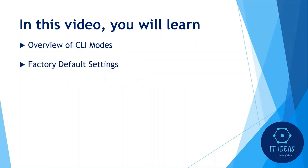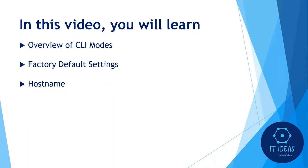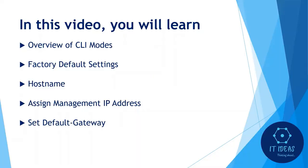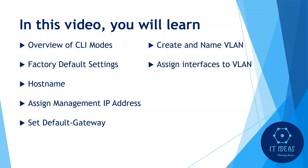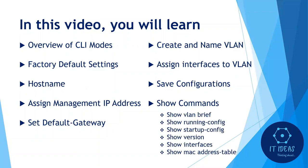How to configure a Cisco switch to factory default settings. Then how to configure a hostname to the switch, how to assign a management IP address, and how to set the default gateway. Then how to create a VLAN and name it, how to assign interfaces to a VLAN, how to save all these configurations, and finally we will see some useful show commands.